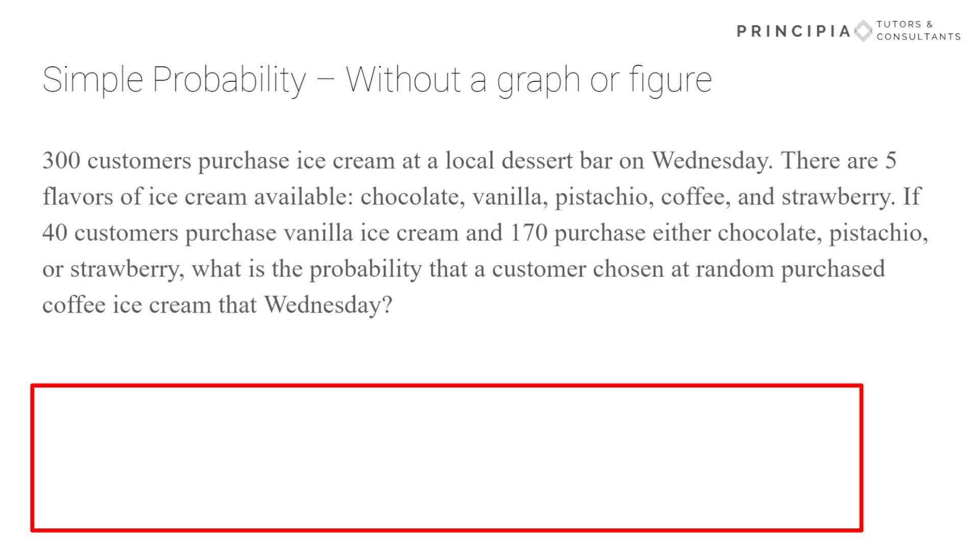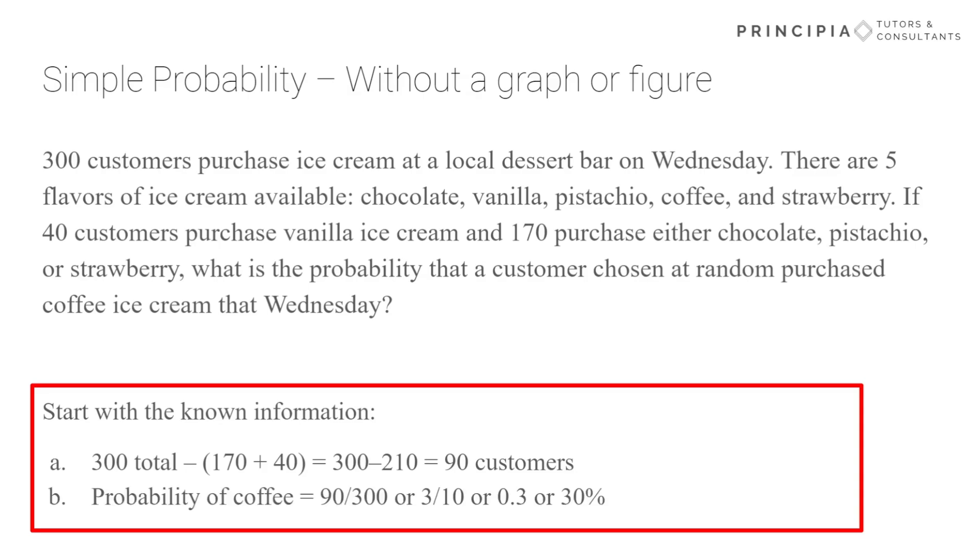All right, whenever you're working on problems like these, I recommend using your scratch paper or note-taking tools to keep track of your solution steps to make sure you can avoid any simple errors. So starting with the given and known information, we have 300 total and 210 of the total have already been accounted for, leaving us with 90 customers that purchased coffee ice cream that Wednesday. So the probability of randomly drawing someone who did purchase coffee ice cream would just be 90 over 300 or 3 over 10 or 0.3 or 30%. The question would specify how to provide your answer.